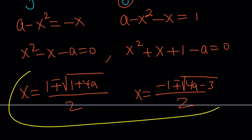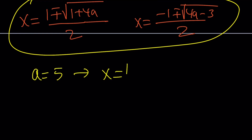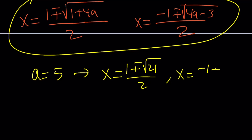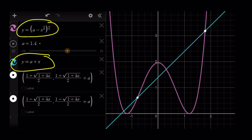Notice that x depends on 'a' — 'a' is a given number. For example, when a equals 5, we get x equals (1 plus or minus the square root of 21) divided by 2, and x equals (negative 1 plus or minus the square root of 17) divided by 2. For some 'a' values the expressions under the radicals could be negative, so we'd need to discuss the domain of 'a'. Here's the graph of these two functions — they're both parametric and depend on the choice of 'a'. For a fixed value I've marked two of the solutions, and there are two more solutions not marked on the graph.